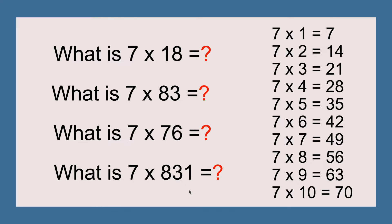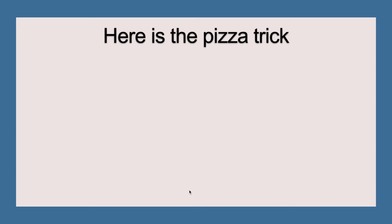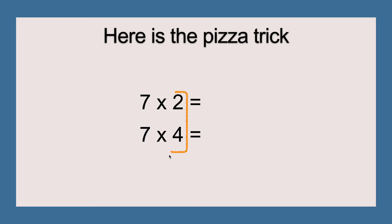The higher the fact, the more likely it's harder. I'm going to show you a trick that is going to make this table seem like the easiest table ever. Here is the pizza trick — I've listed two facts as usual: seven times two and seven times four. We'll be circling these and putting a full pizza above it.